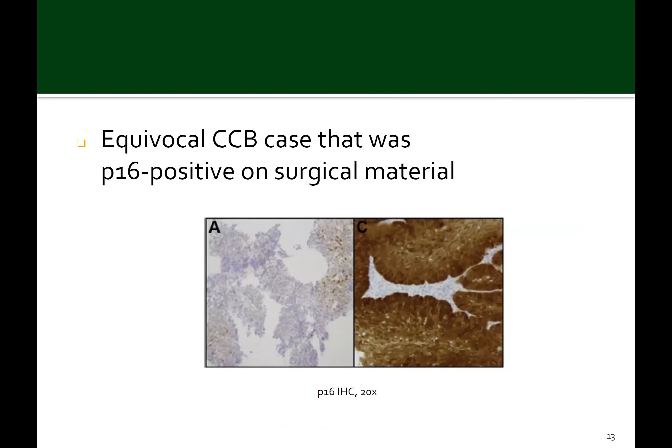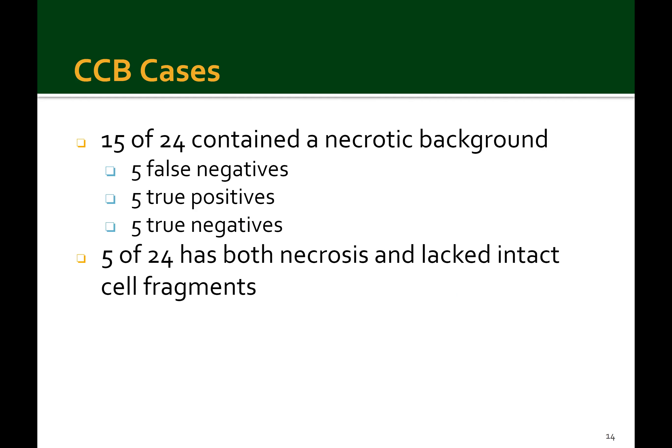There were two equivocal cytolite cell block cases that were subsequently positive on their surgical material. They showed patchy nuclear staining in less than 10% of cells with a range of 15 to 80% cytoplasmic blush. Panel A shows 5% patchy moderate nuclear staining with about 15% weak cytoplasmic, and panel C shows the corresponding histology section with clear positivity. To summarize the cytolite fixed cell blocks: 15 of 24 showed a necrotic background, with 5 false negative, 5 true positive, and 5 true negative among those. Five cases had both necrosis and lacked intact cell fragments.